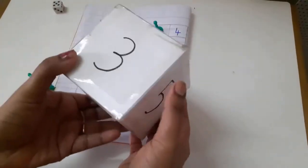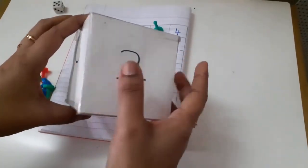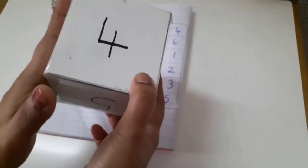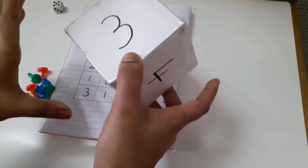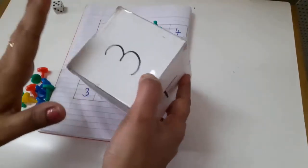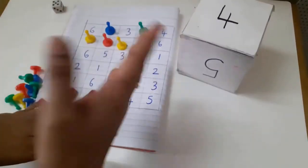These kind of jumbo dices which you can prepare yourself at home. Any empty cube boxes whatever you get, you can stick white paper and just write the number. They find it very enjoyable to use these giant boxes because they can roll the dice even on the floor.